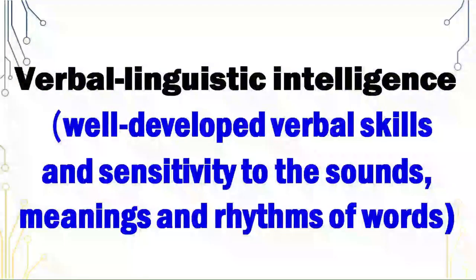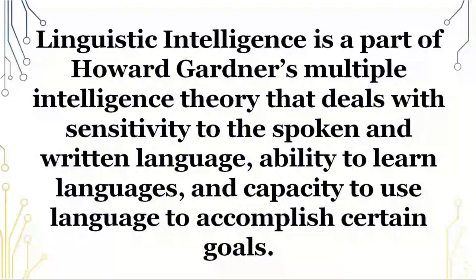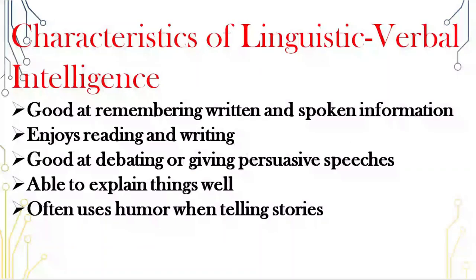Let us know about these multiple intelligences in detail. Verbal linguistic intelligence: people having verbal linguistic intelligence have well-developed verbal skills and sensitivity to the sounds, meanings and rhythms of words. Linguistic intelligence deals with sensitivity to the spoken and written language, ability to learn languages and capacity to use language to accomplish certain goals. People having linguistic verbal intelligence are good at remembering written and spoken information, enjoy reading and writing, and are good at debating and giving persuasive speeches. They are able to explain things well.